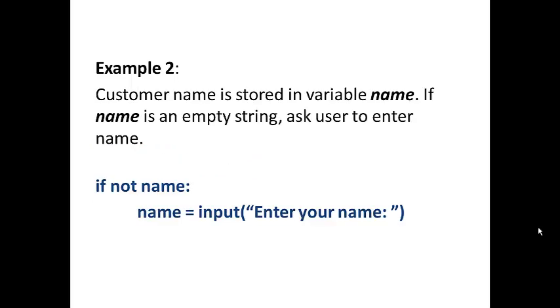Example two. Customer name is stored in a variable called name. If this variable name is an empty string, then we want to ask the user to enter his name. So we can simply say if not name. The reason we're able to do that is because if name is an empty string, it will return false. If name is anything other than an empty name, it will return true. And then we use the not operator to negate that. So if there's nothing in name, it would return false, and then we negate that and it returns true.